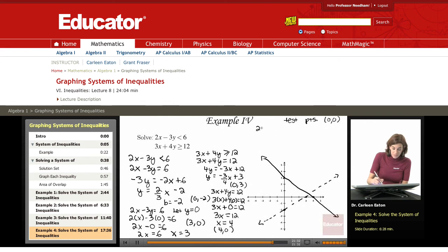For the first one, I have 2x minus 3y is less than 6. So 2 times 0 minus 3 times 0 is less than 6. Is 0 less than 6? Yes.